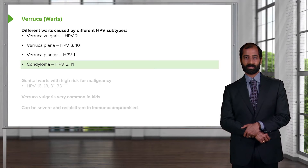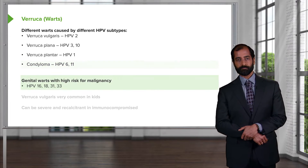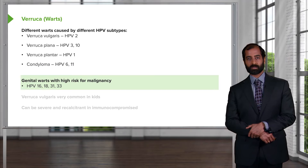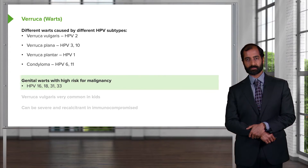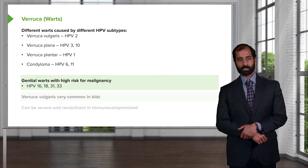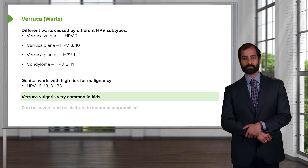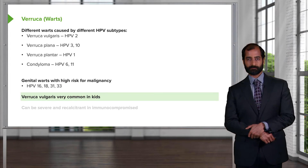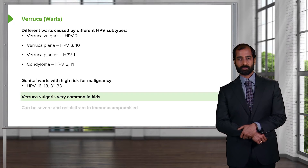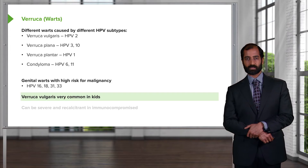Verruca vulgaris, verruca plana, verruca plantaris, and condyloma acuminata. The genital warts with higher risk of malignancy refer to HPV16, 18, 31, and 33. Verruca vulgaris is very common in kids, associated with HPV2. If it helps you, think about the 'terrible twos' — HPV2 may result in verruca vulgaris.